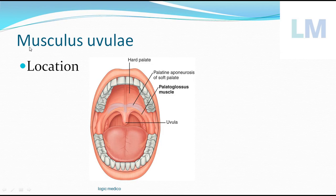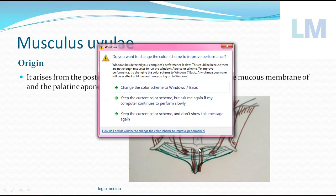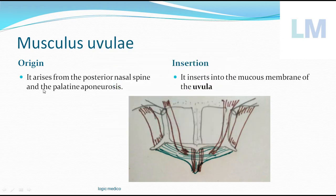Within this conical projection there is a pair of muscles called Musculus Uvulae. It arises from a spine-like projection from the posterior border of the hard palate, called the posterior nasal spine, and also from a part of the palatine aponeurosis.